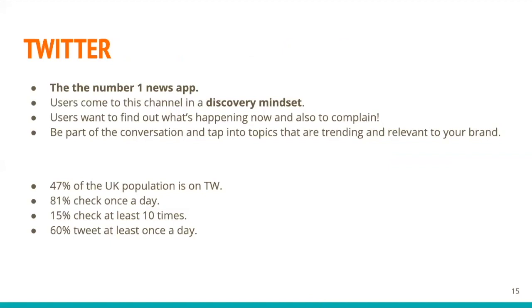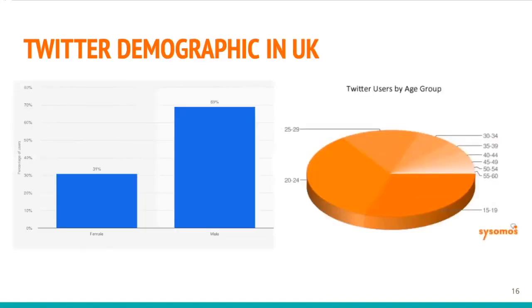Twitter works again completely differently. It's the number one news app in the world, which means people go to Twitter even before going to BBC News to know what's going on. Audiences go on Twitter because they want to share opinions, know information and news about the world, and also they want to complain.